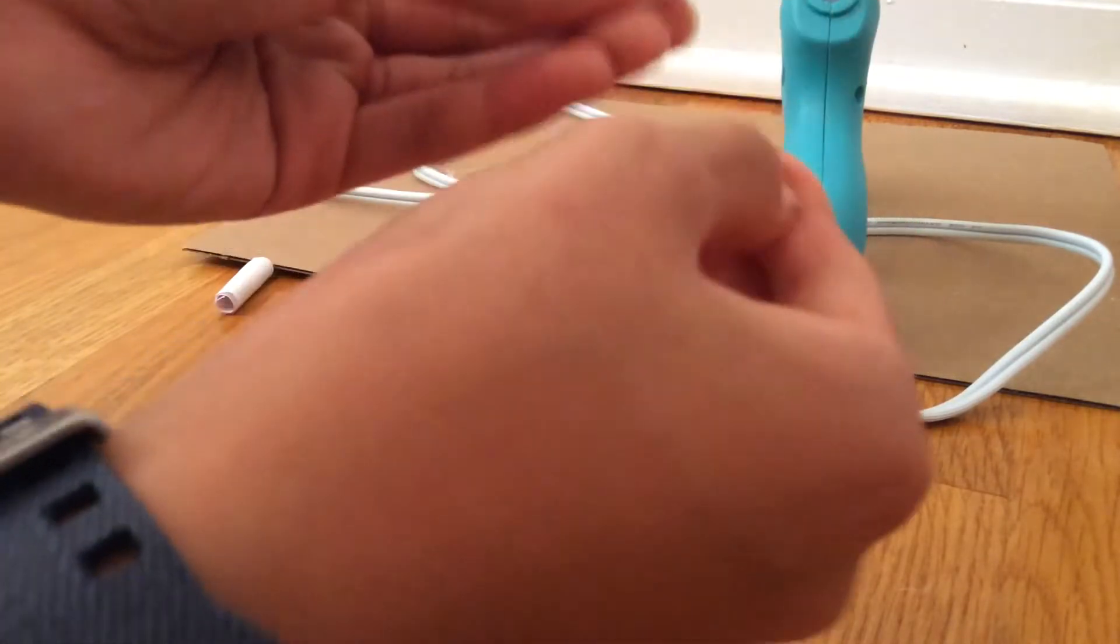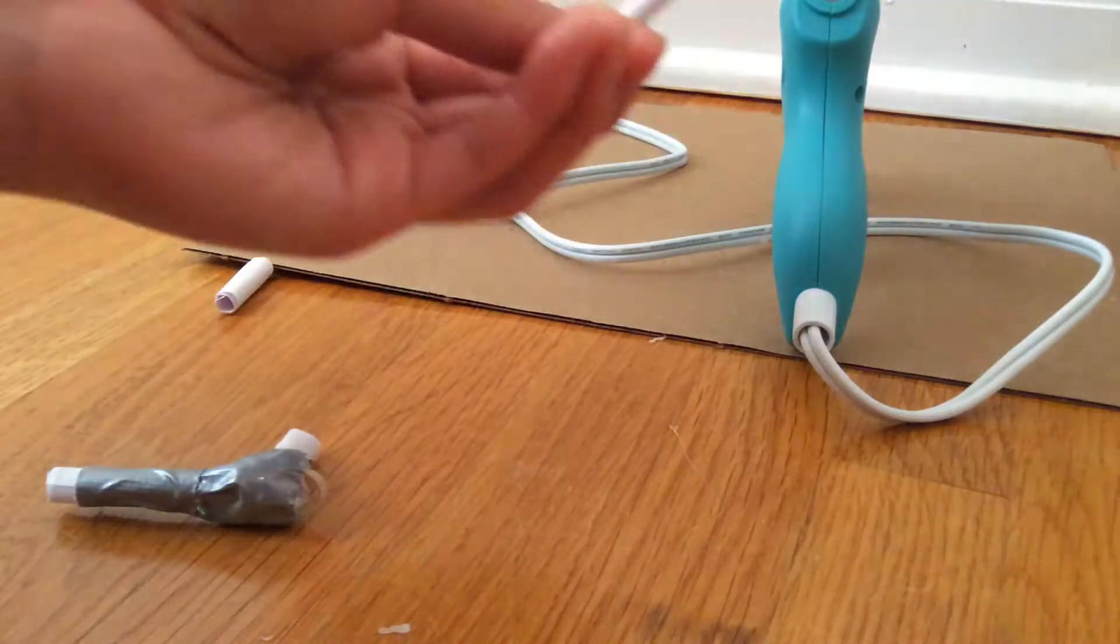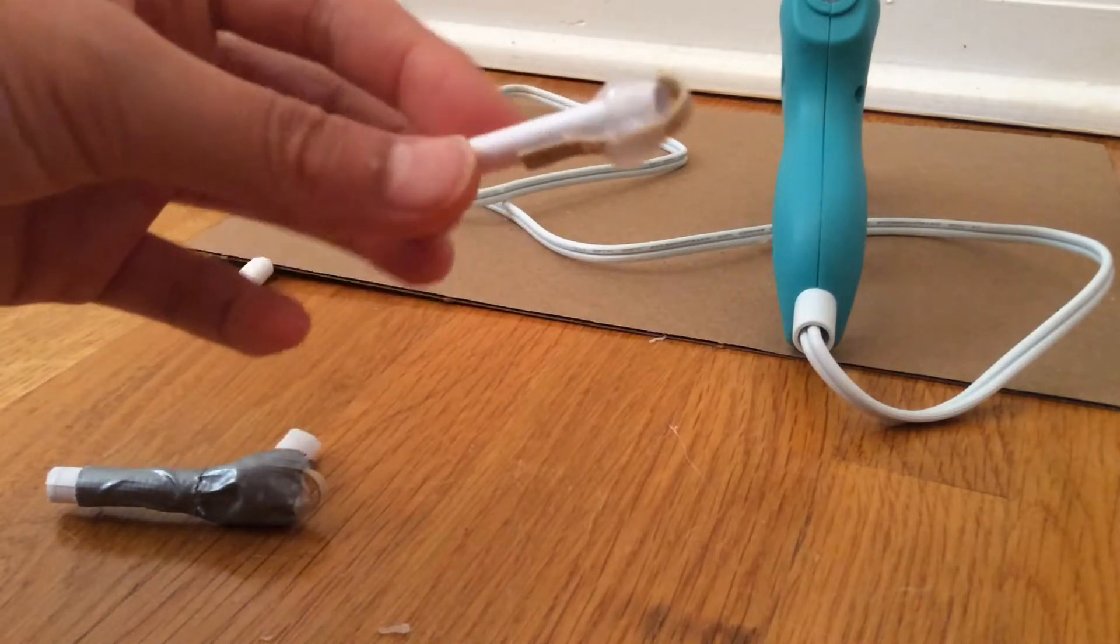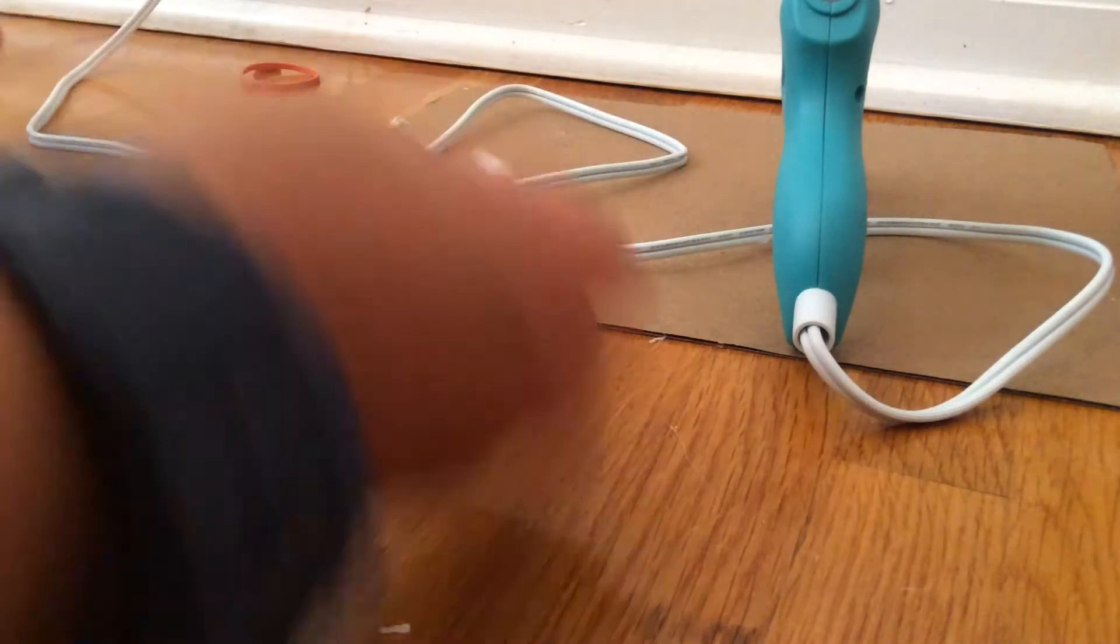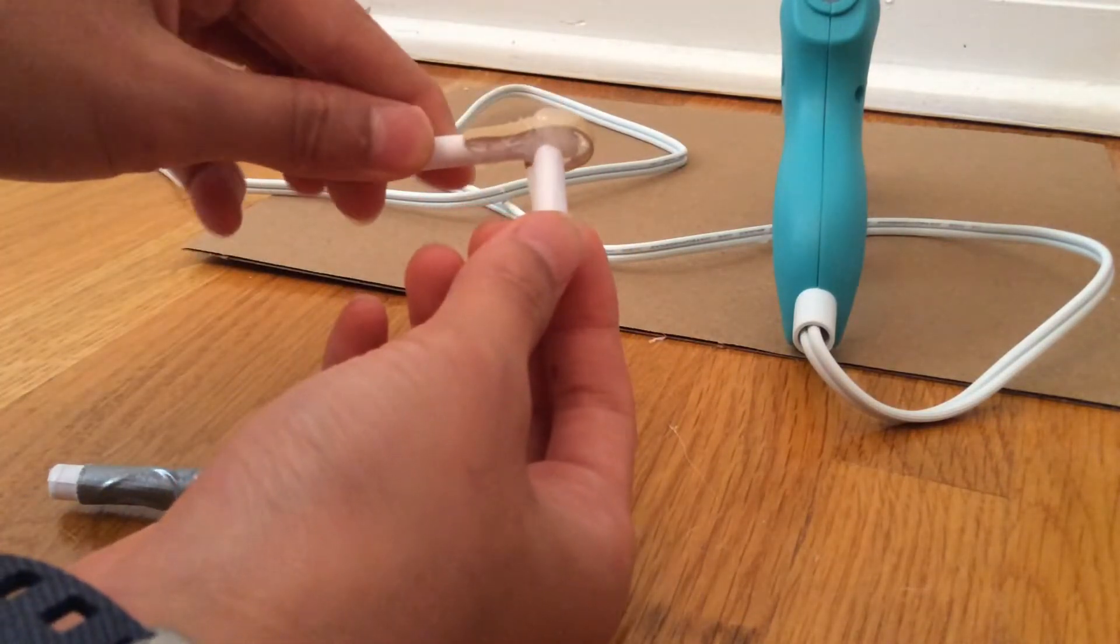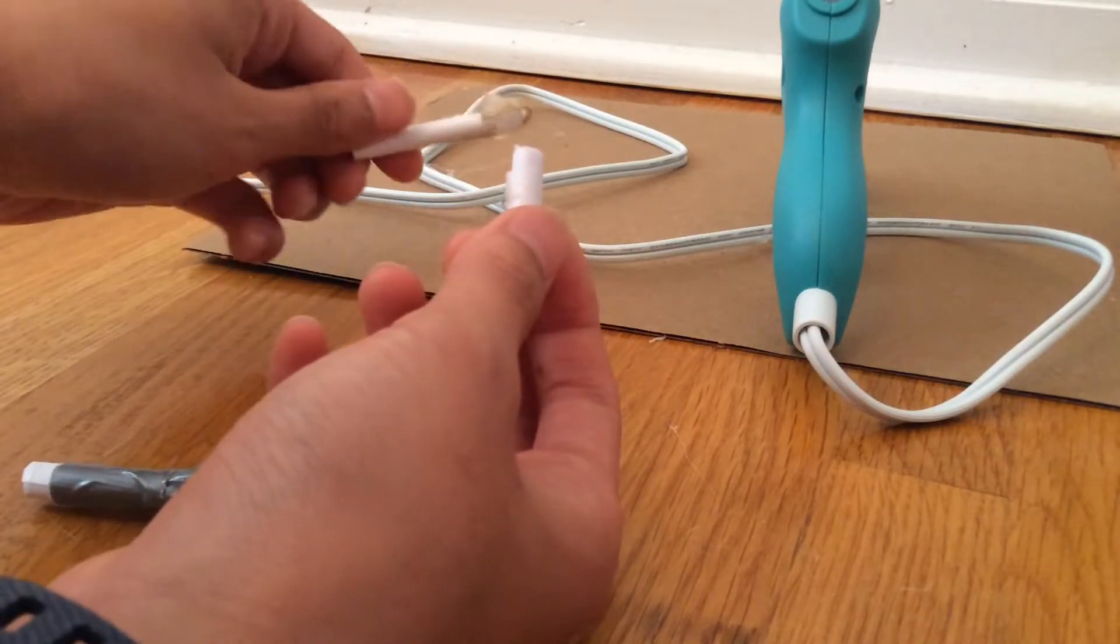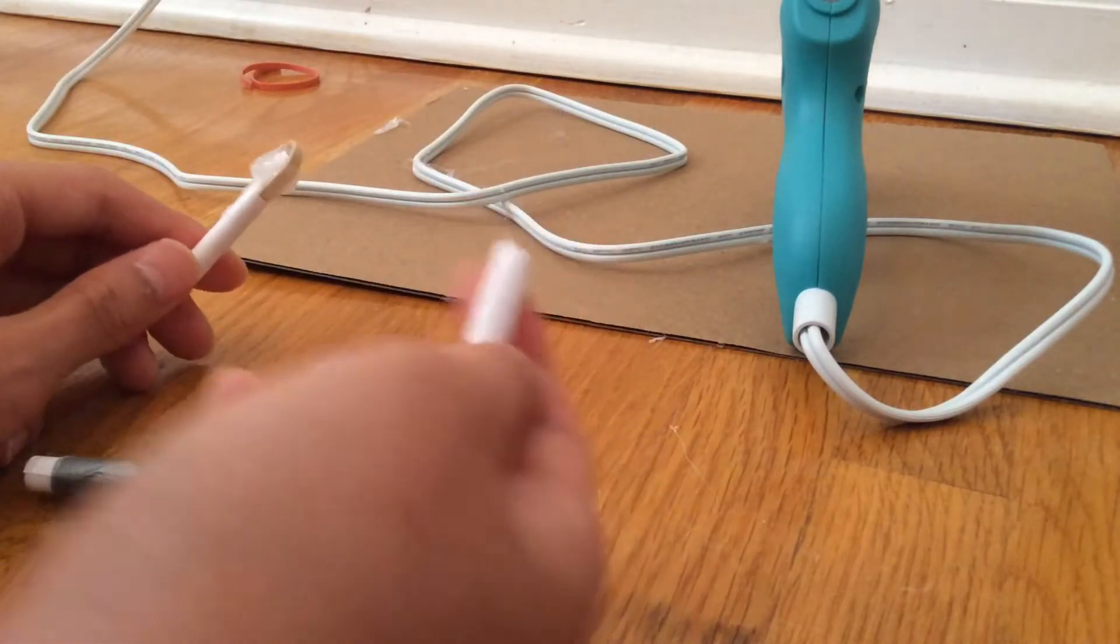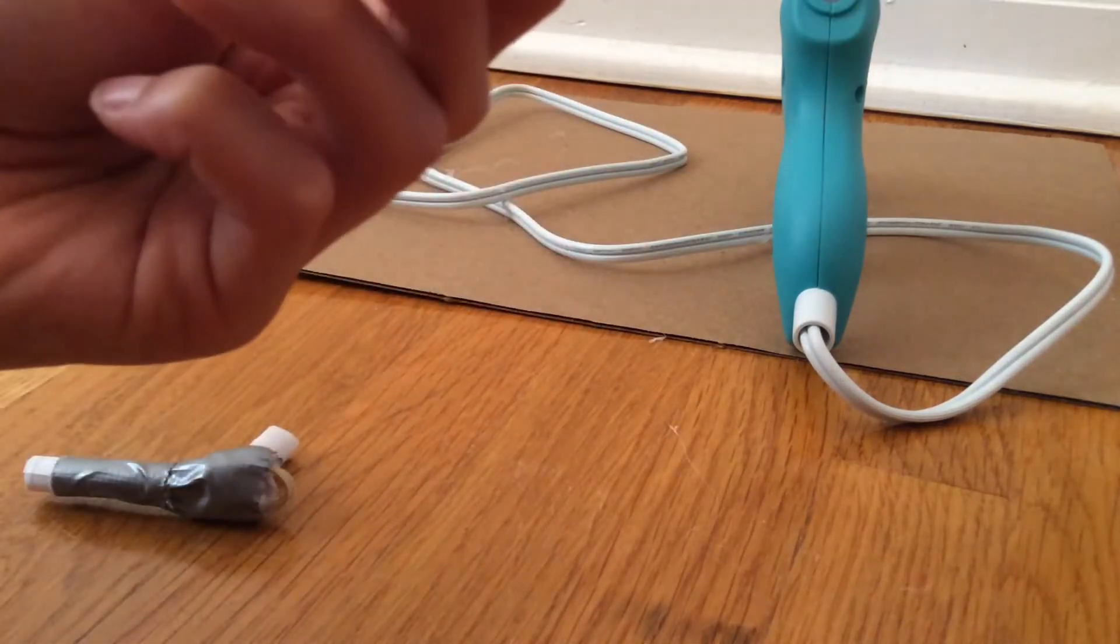And then make sure the rubber band is secure. So yeah, it seems like it's dry now. Now what we'll do is we have to glue the barrel on here like that. Oh, I guess the hot glue wasn't ready but whatever.